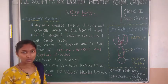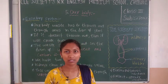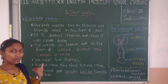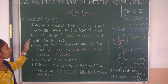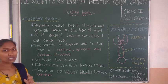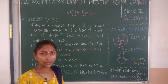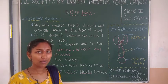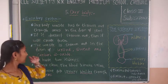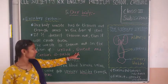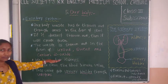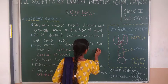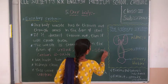In the excretory system, waste is already produced in our body and then transferred to the excretory system. This excretory system takes whatever waste product is there and throws it out of our body — in the form of urine, sweat, carbon dioxide, and also in the form of stool.